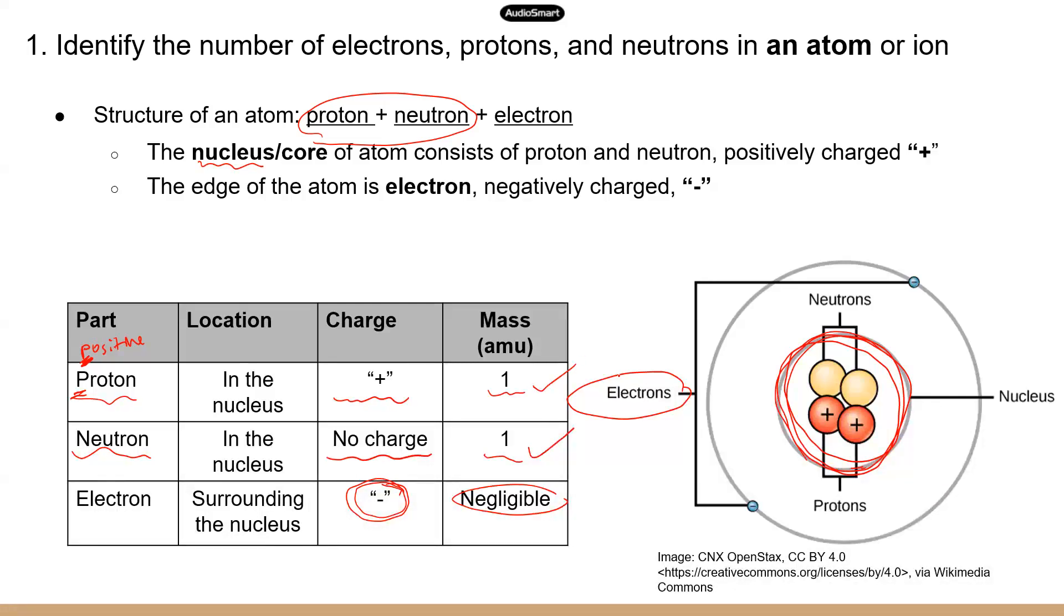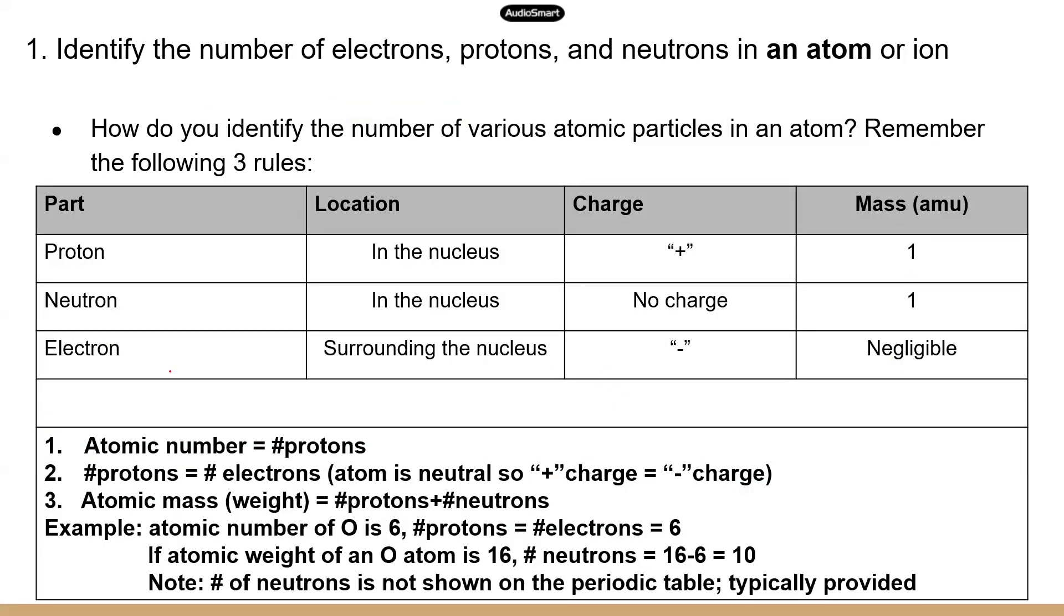So as long as you can remember the charge and the weight information for the three types of particles, then you can solve any problems. I have summarized three rules to kind of help you identify the number and the weight of different particles in an atom. Atomic number is the same as the number of protons. So atomic number is just when we put elements in order in the periodic table, we order them based on the number of protons. So that's why the atomic number and the number of protons are exactly the same.